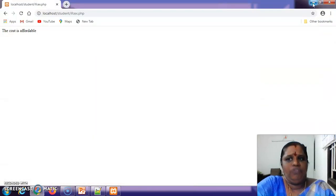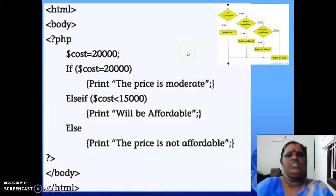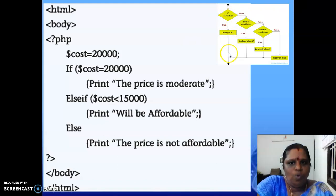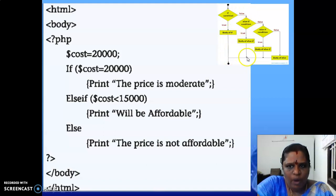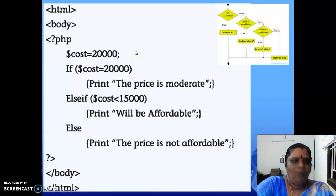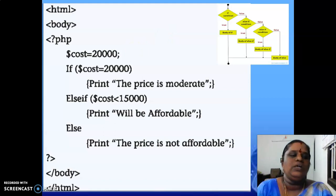So if the cost is below 15,000 it is affordable; if it equals 20,000 it is moderate; and if these two conditions are not satisfied — for example if the cost is above 20,000 or between 15,000 and 20,000 — the cost is not affordable. Like this we will have conditional statements, as shown in the flowchart: if condition true, body of if executes; if false it goes to else-if, and so on.